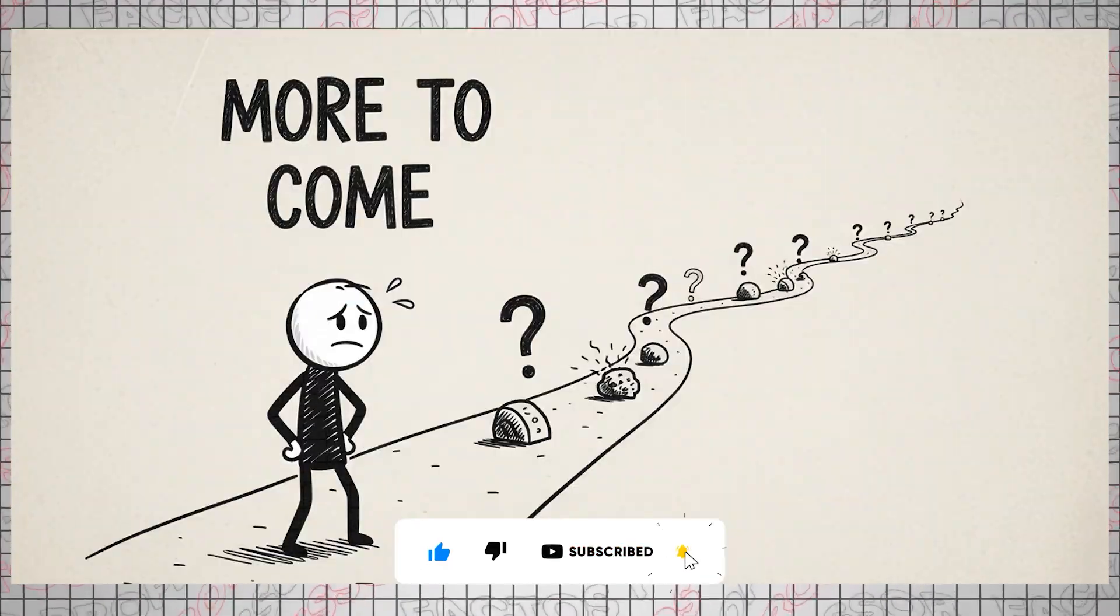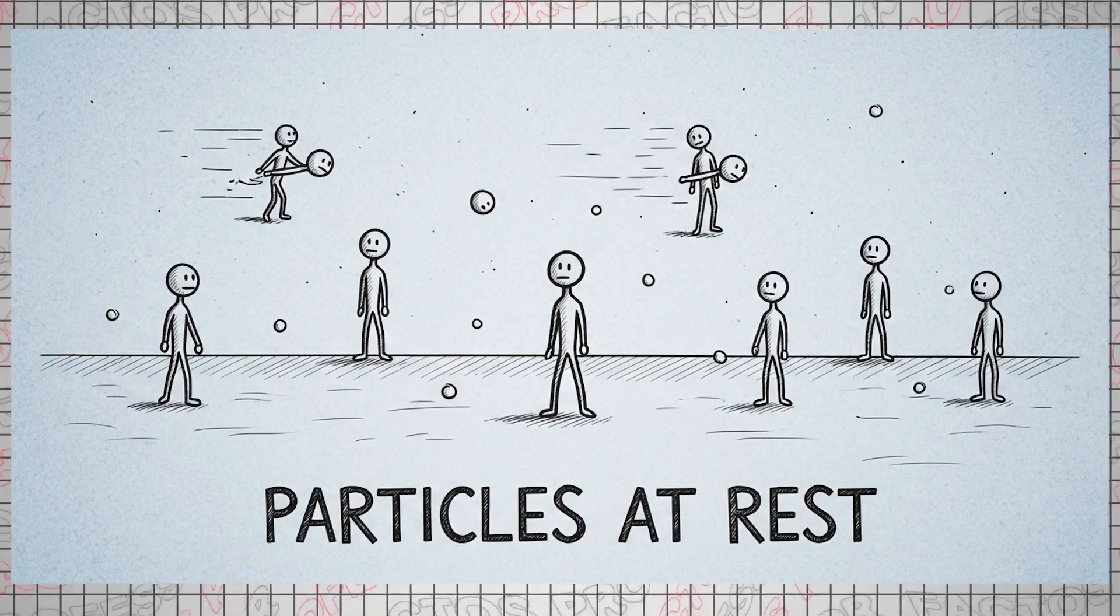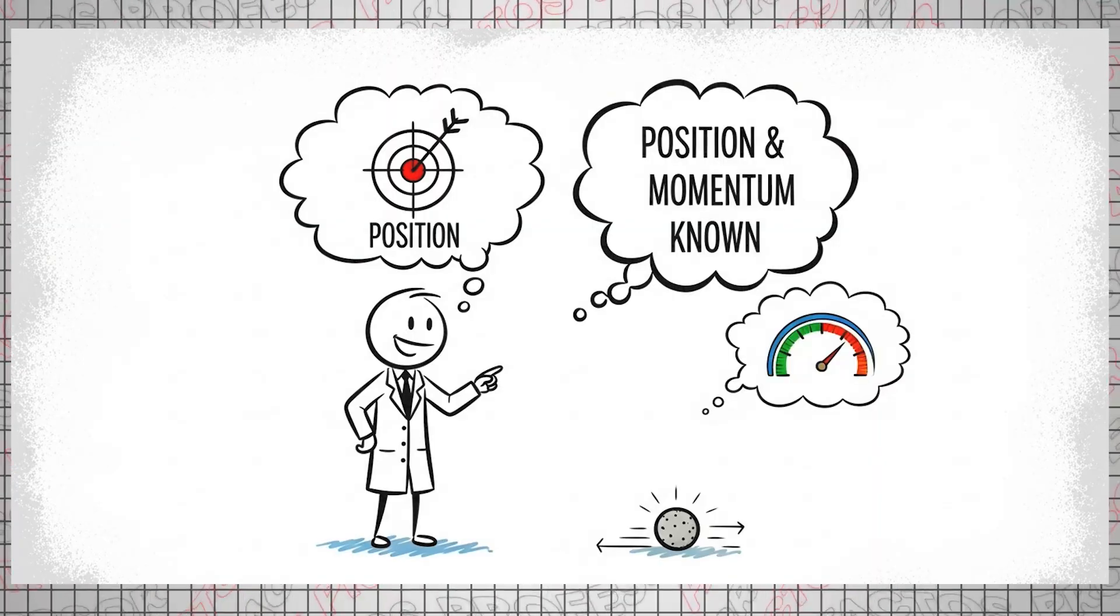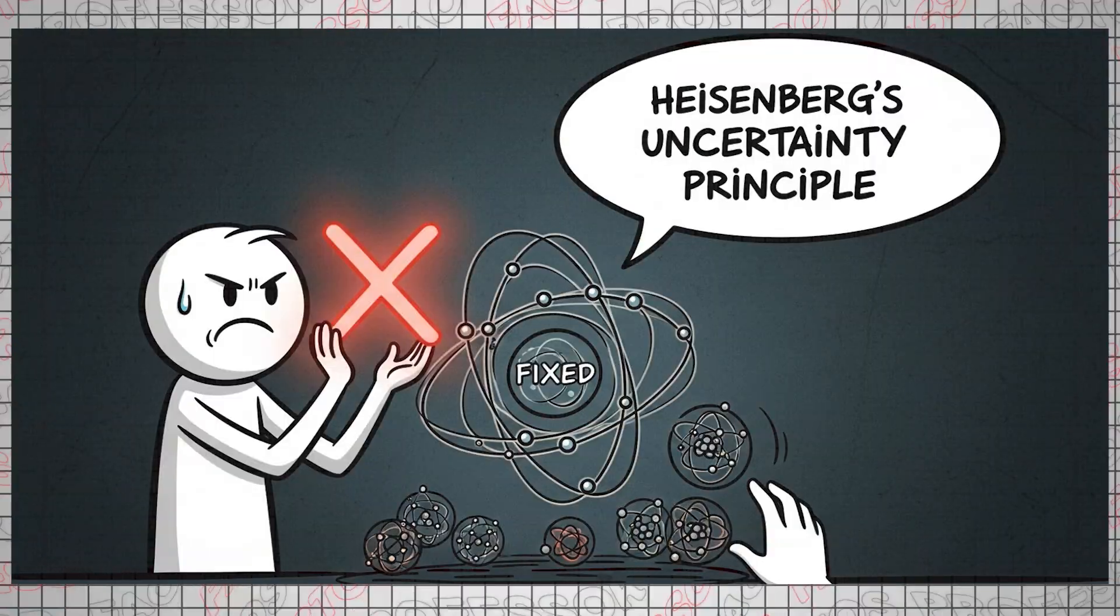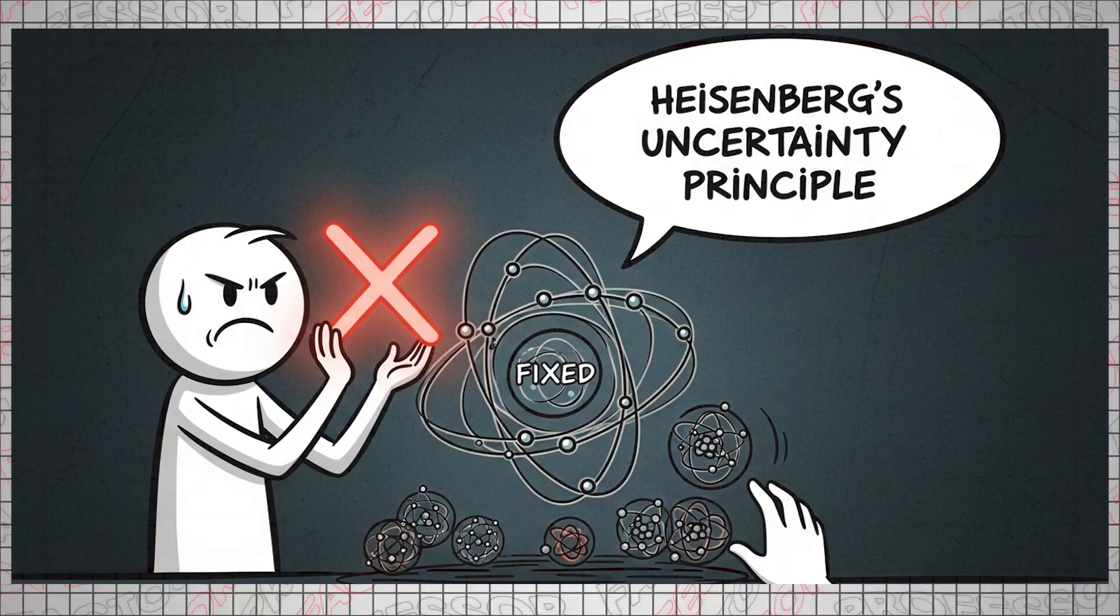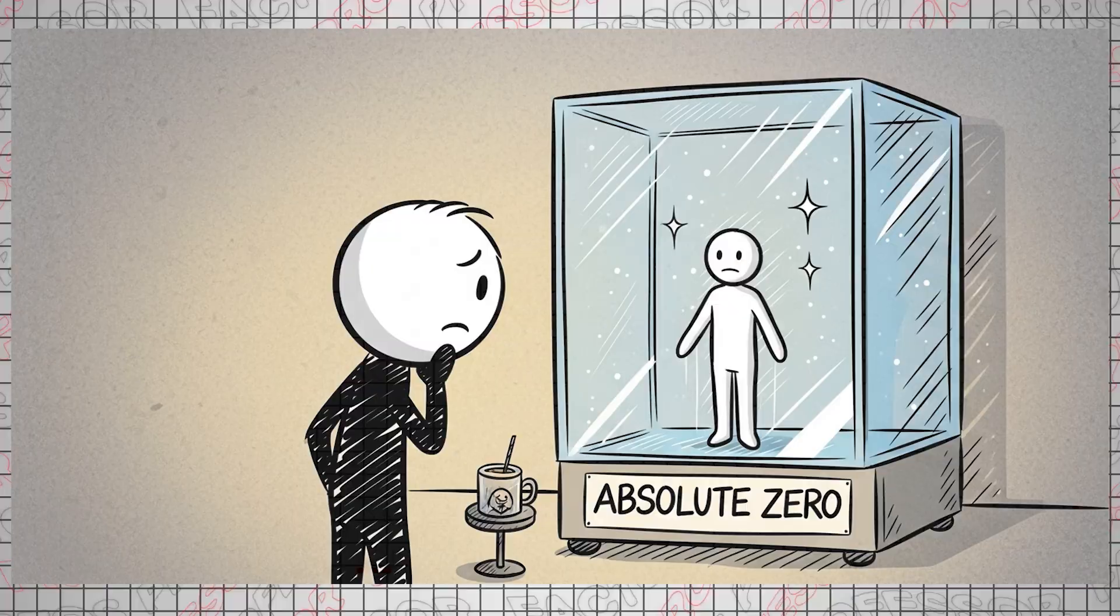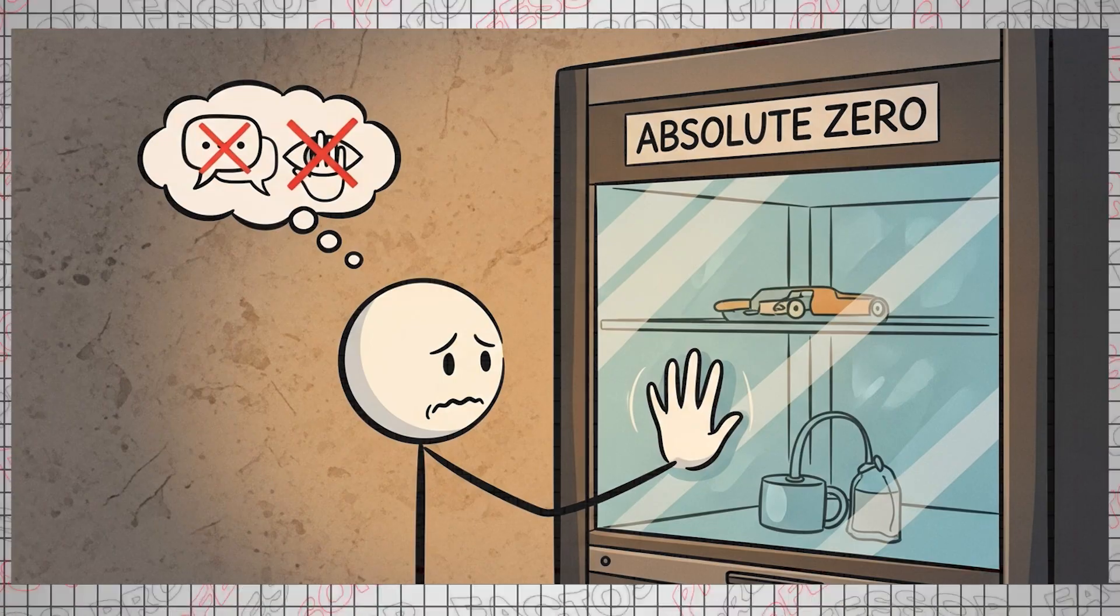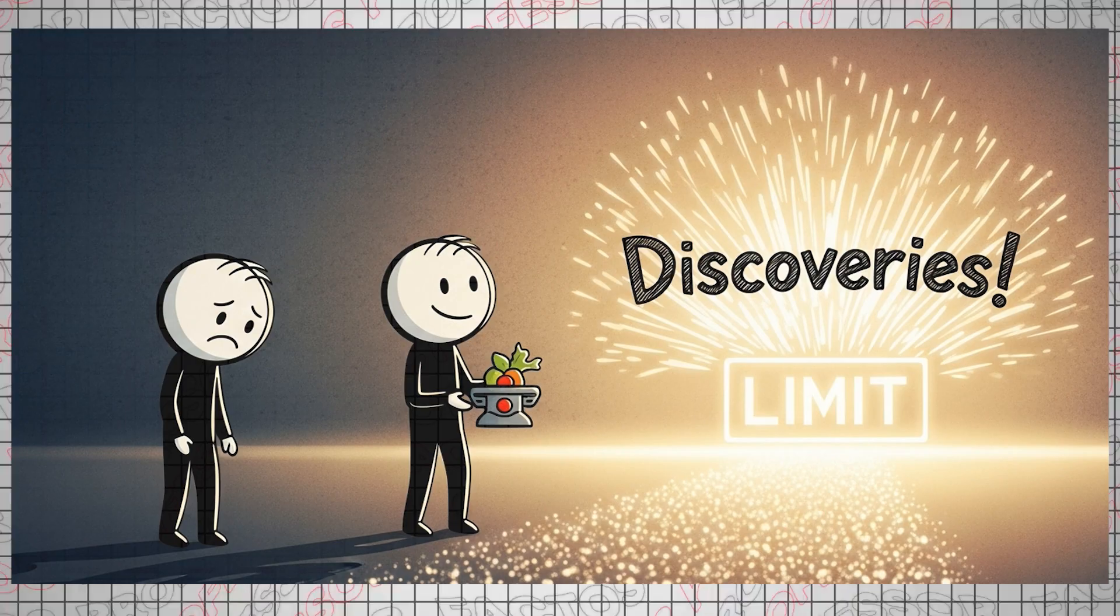Furthermore, there's another issue. At absolute zero, the measure of disorder, or entropy, would be zero, which the third law of thermodynamics strictly forbids. And it doesn't stop there. If particles were to completely stop moving, meaning they were perfectly still, then logically we would be able to simultaneously determine both their exact position and momentum. However, Heisenberg's uncertainty principle, a fundamental tenet of quantum mechanics, also prohibits this.